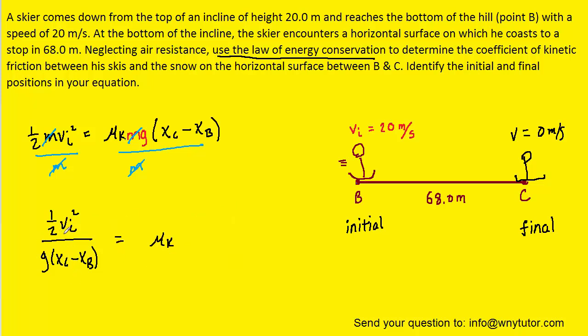And then at this point, we can simply plug in the known values. The initial speed of the skier was given as 20 meters per second. So we can plug that in. We know, of course, that g is equal to 9.8 meters per second squared. And then this term xc minus xb, which was the final position minus the initial position, that's just the displacement. And we can see from the picture and from the given information that that displacement is 68 meters. So we'll plug that in. We'll pick up our calculators. And when we punch that all in, we can see that the coefficient of kinetic friction turns out to be approximately 0.3. And so this is the correct answer to the question.